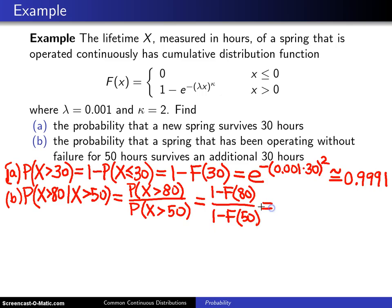1 minus capital F of 80 will be e to the minus 0.001 times 80 squared, and 1 minus capital F of 50 will be e to the minus 0.001 times 50 squared.